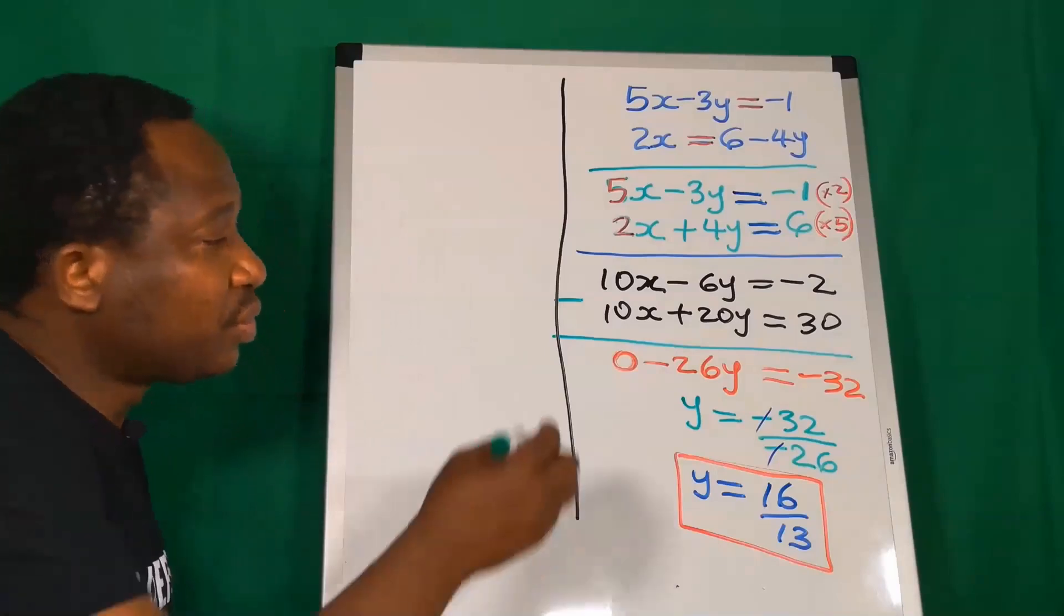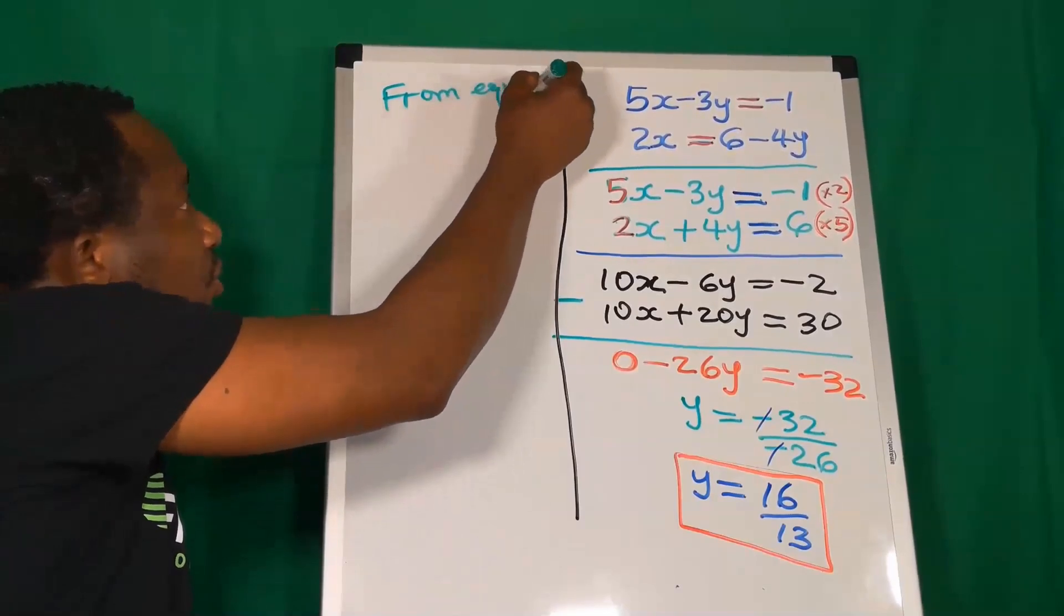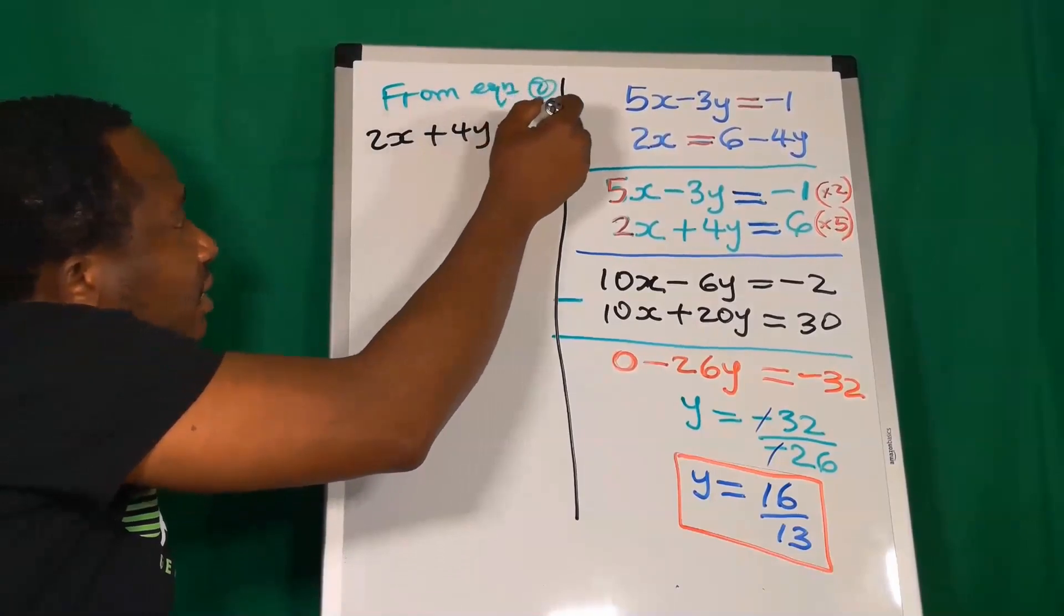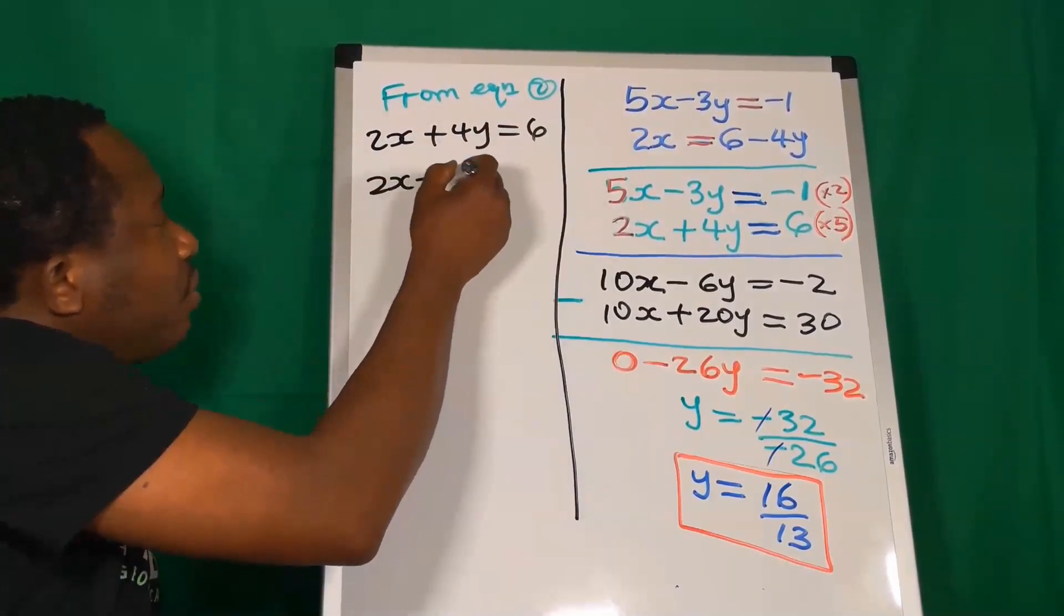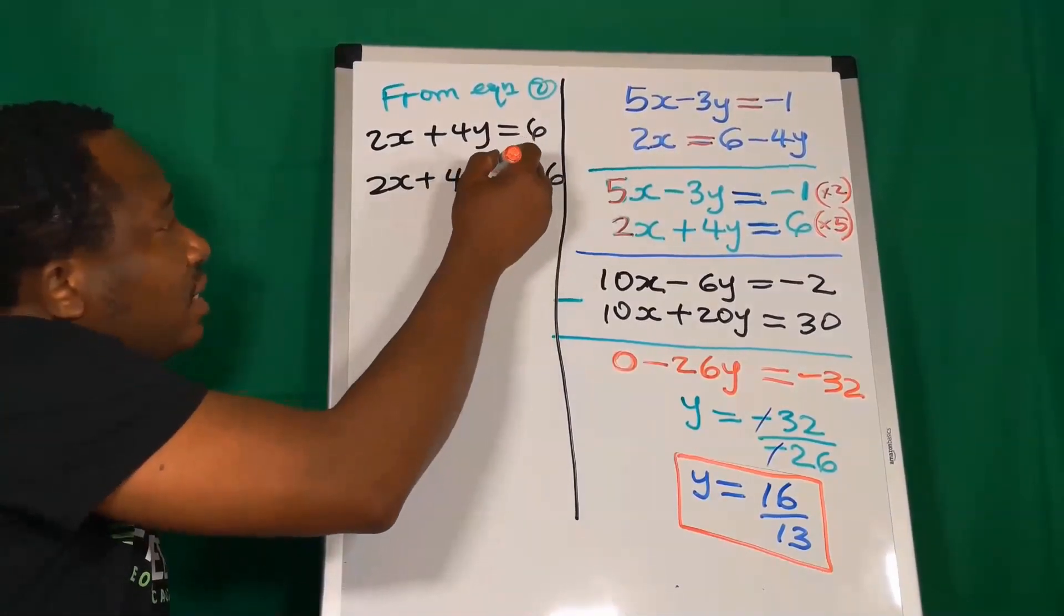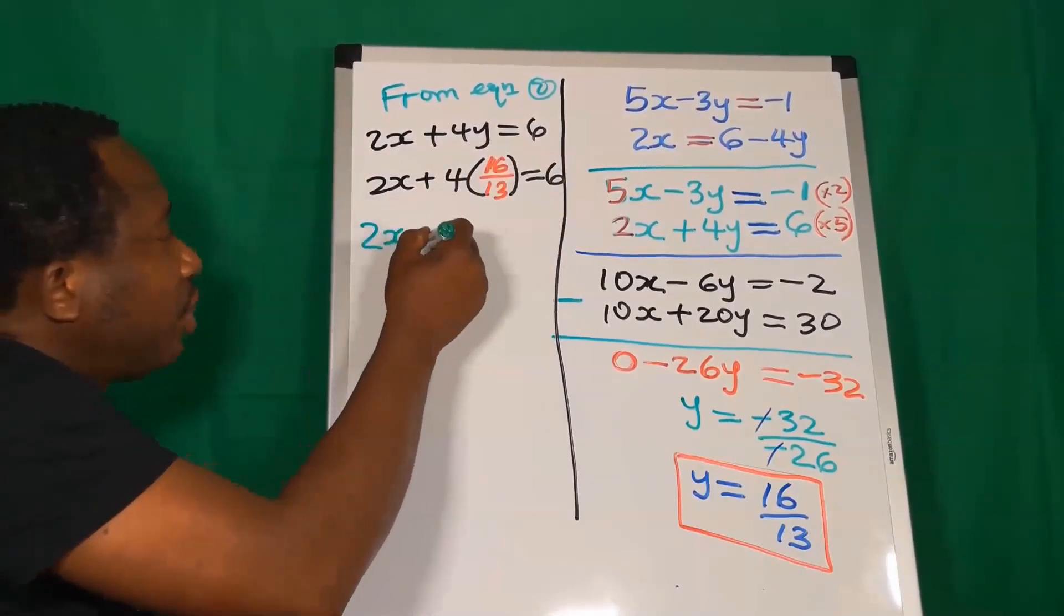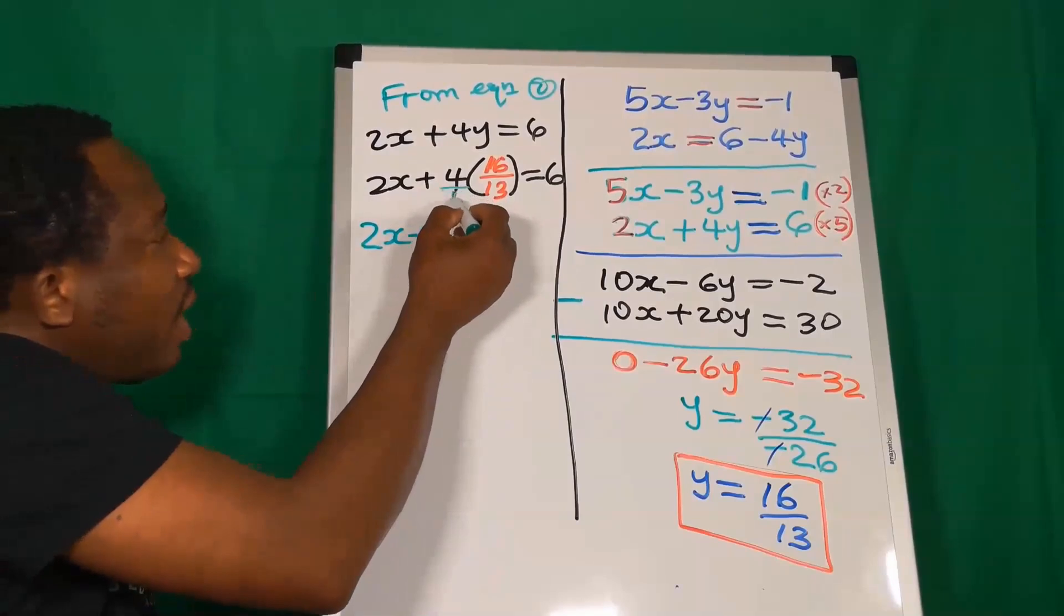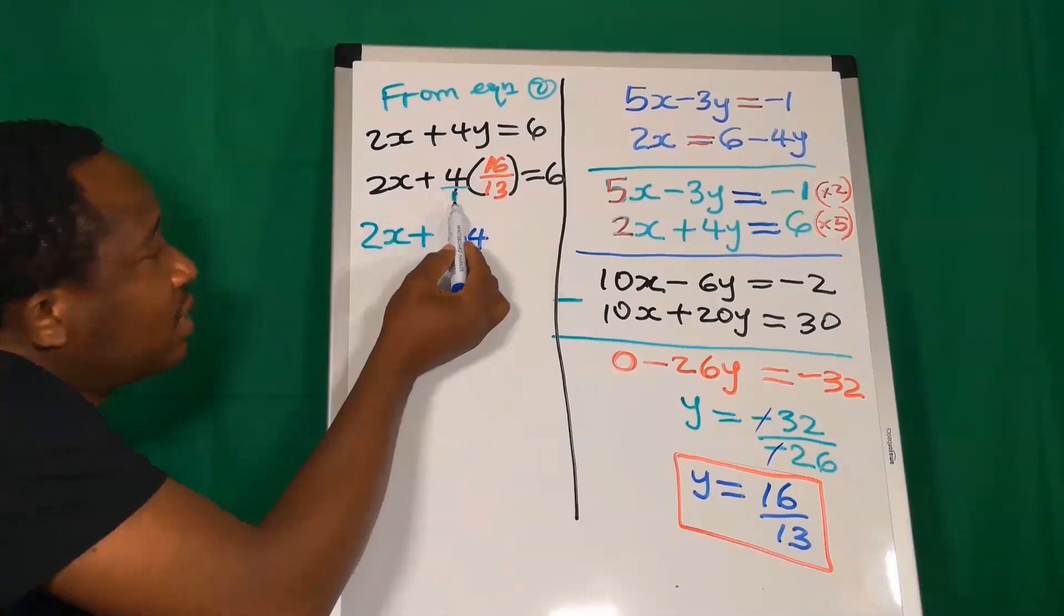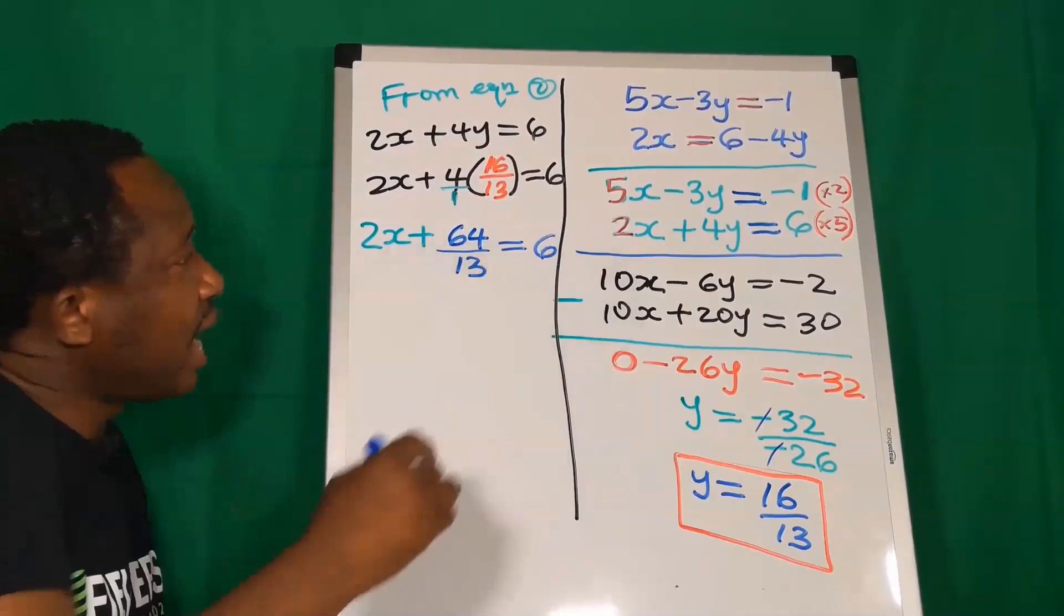Here, I'm going to use equation 2. From equation 2, I have 2x plus 4y is 6. 2x plus 4y where y is 16 over 13. I have 2x plus this is like over 1. Remember, 4 multiplied by 16, 1 times 13 will give you 13. And on the other side, we have 6.